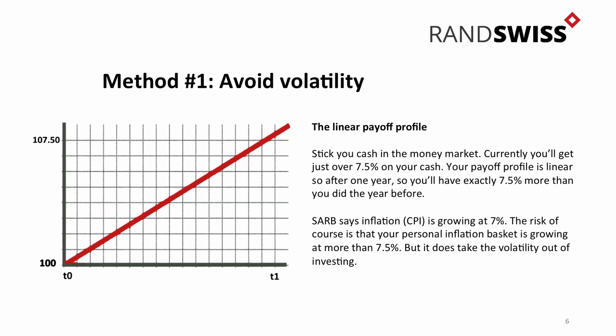Now we're going to look at how to avoid volatility. The first way of getting rid of volatility out of a portfolio is you just avoid volatile products. The easiest thing to do is pick something with a linear payoff profile. You can stick cash in the money market - we do money market accounts, very simple. 7.4%. Stick your money in there, don't worry about it, and you will get 7.4% at the end of the year. You know at T0, T1, what your payoff profile will be. Very, very boring - not going to give you anything to write home about.